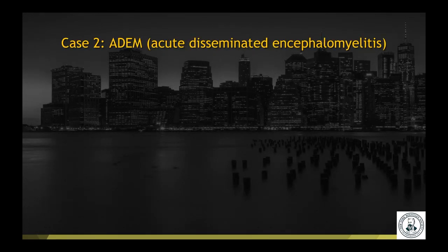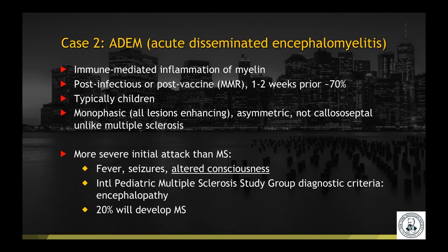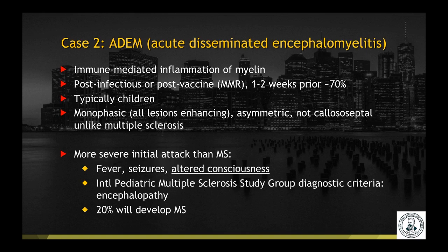These are cases of ADEM — acute disseminated encephalomyelitis. This is an immune-mediated disease of the myelin, often post-infectious or post-vaccine, typically seen in children, although adults can also have ADEM. Unlike multiple sclerosis, it tends to be monophasic, with all the lesions enhancing at the same time, and it can often be more asymmetric than MS. The initial attack is much more severe, often with fever, seizures, and altered consciousness. Diagnostic criteria from the International Pediatric Multiple Sclerosis Study Group found encephalopathy was a key criterion, and 20% of these patients will go on to develop multiple sclerosis.